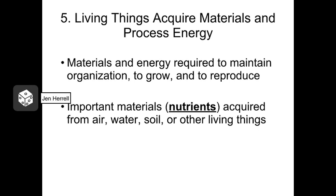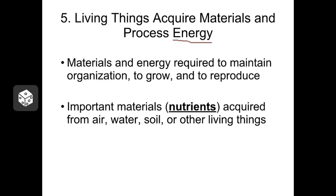All living things have to be able to acquire materials and process energy in order to remain alive. Materials are called nutrients — the things we use to physically build our bodies. Nutrients can include everything from atoms of carbon, hydrogen, and oxygen to more complex molecules such as carbohydrates and proteins, and even vitamins and minerals. Energy, on the other hand, is the force that makes matter do things — it makes matter perform work. So in order to make our bodies work the way that we want them to, we have to have a certain amount of energy.